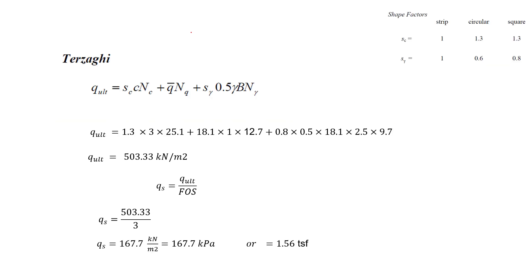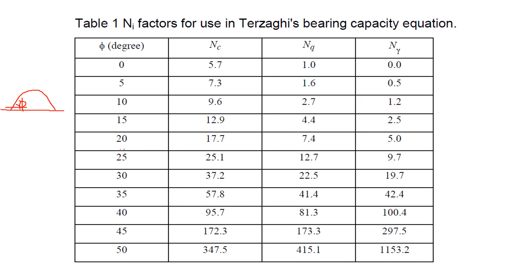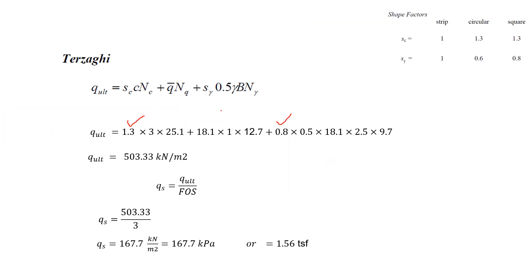Putting in the values using Terzaghi's formula: sc·c·Nc + q-bar·Nq + s_gamma·0.5·gamma·b·N_gamma. Since the footing is square, sc = 1.3 and s_gamma = 0.8. Cohesion c = 3. From the Terzaghi table at phi = 25 degrees, we pick Nc = 25.1, Nq = 12.7, and N_gamma = 9.7.